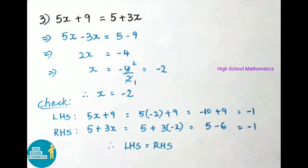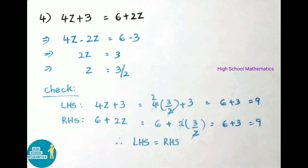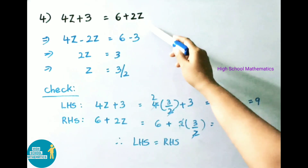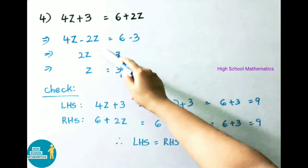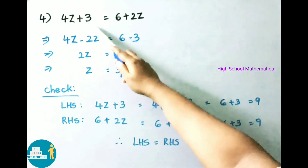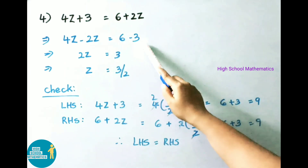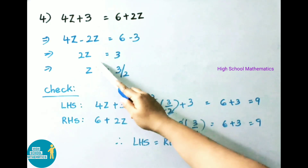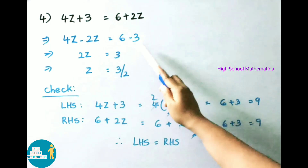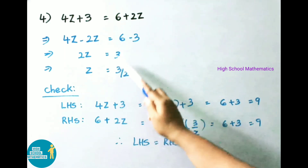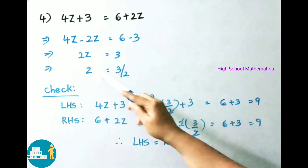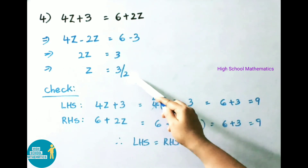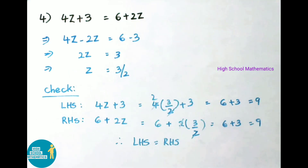Question 4: 4Z + 3 = 6 + 2Z. Transposing 2Z gives minus 2Z; transposing plus 3 gives minus 3. So 4Z − 2Z = 2Z and 6 − 3 = 3. Therefore Z = 3/2.